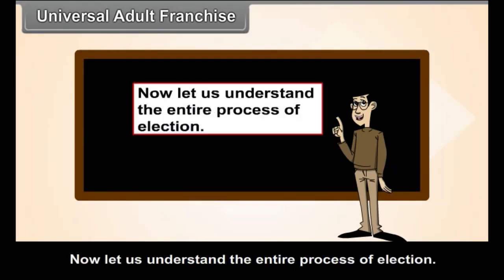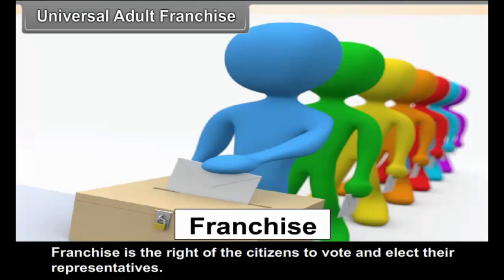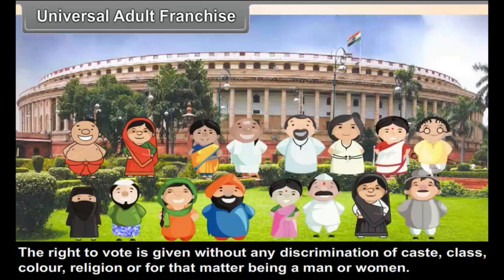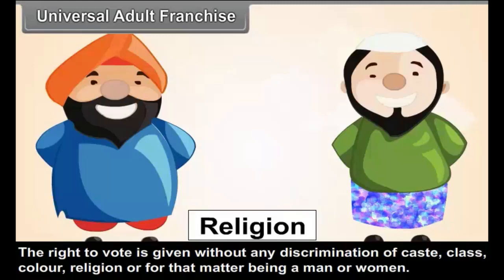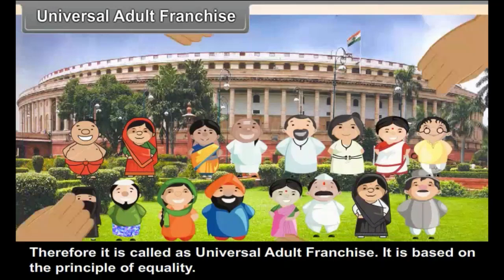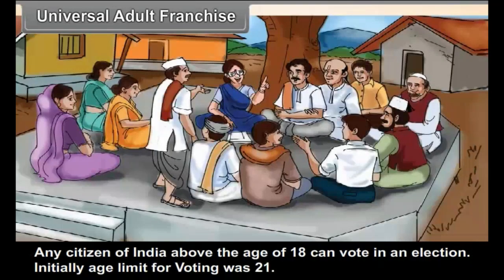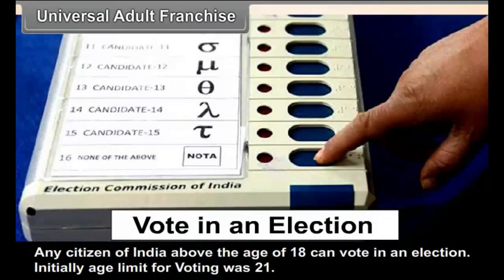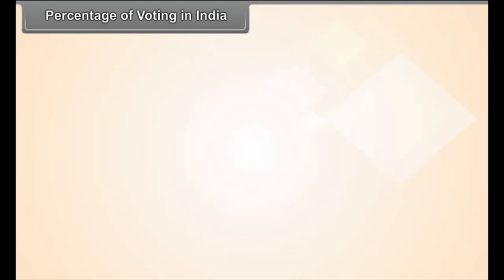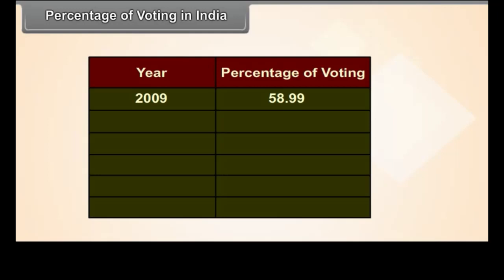Universal Adult Franchise: Franchise is the right of citizens to vote and elect their representatives. This right is equal to all. The right to vote is given without any discrimination of caste, class, colour, religion, or gender. Therefore, it is called Universal Adult Franchise, and it is based on the principle of equality. Any citizen of India above the age of 18 can vote in an election. Initially, the age limit for voting was 21.